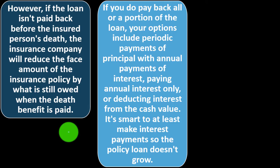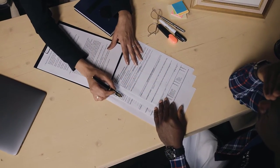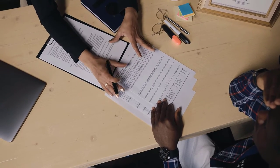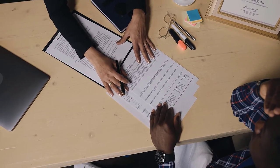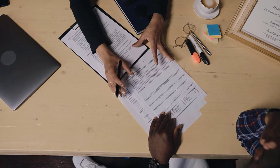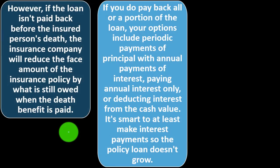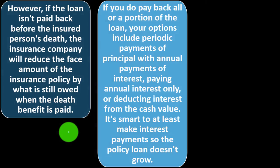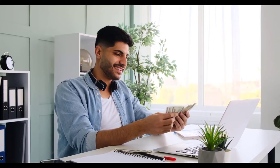If you do pay back all or a portion of the loan, your options include periodic payments of principal with annual interest payments, paying annual interest only, or deducting interest from the cash value. It's smart to at least make interest payments so the policy loan doesn't grow. You'd generally want to be paying at least the interest on the loan so that the principal doesn't increase and so you have some plan to be paying back the loan.